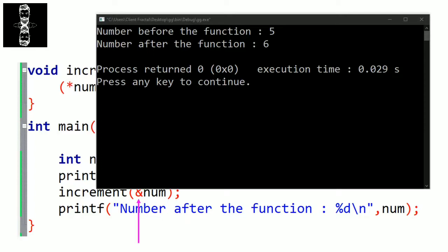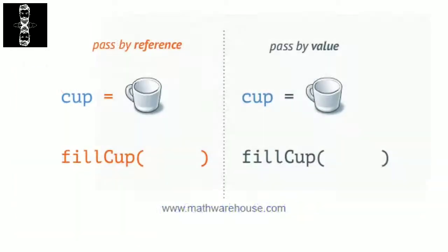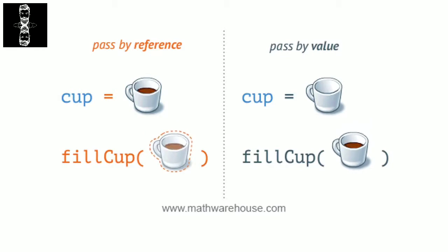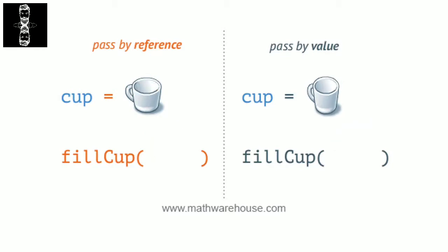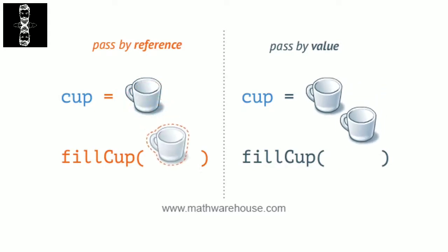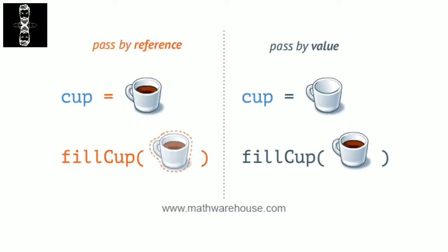In the next video, we will make a lot of functions to understand better how to use them. Before ending this video, I want to show you a GIF from mathwarehouse.com that shows the difference between pass by value and pass by reference. We have a cup of coffee and a function that fills it. On the right it represents pass by value — the parameter is a copy of the cup, so when it's filled, the original isn't modified. On the left, we have pass by reference — we gave the address of the cup to the function, which is why it got filled after calling the function.